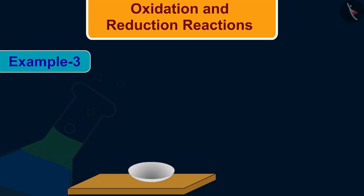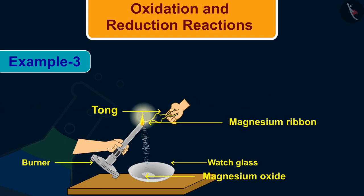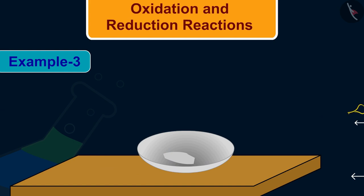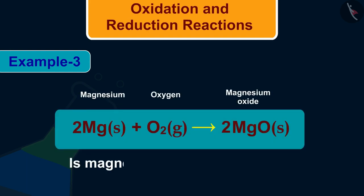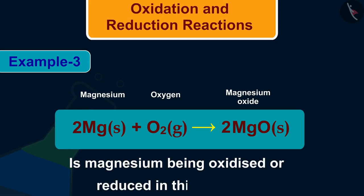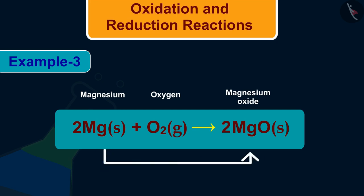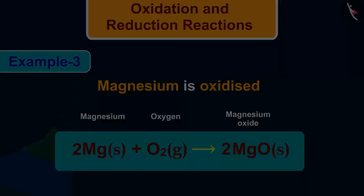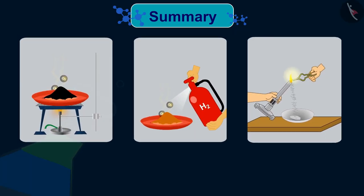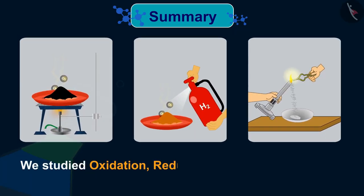In the third example, burn the magnesium ribbon in a bright flame. The white substance magnesium oxide is formed when magnesium is combusted. Is magnesium being oxidized or reduced? Yes — because oxygen is increasing in magnesium, we can say that magnesium is oxidized. So friends, in this video we studied oxidation, reduction, and redox reactions.